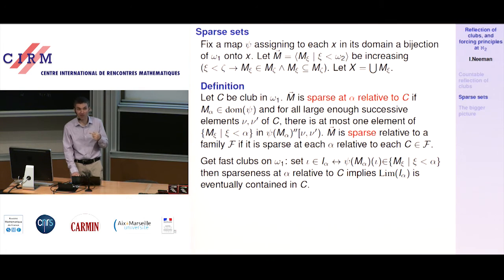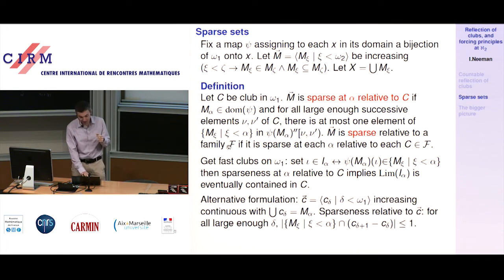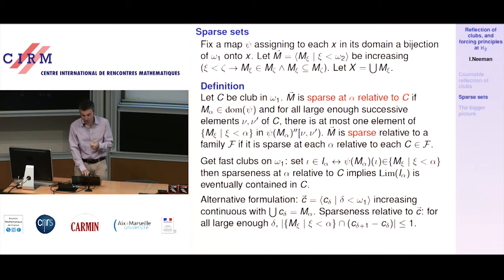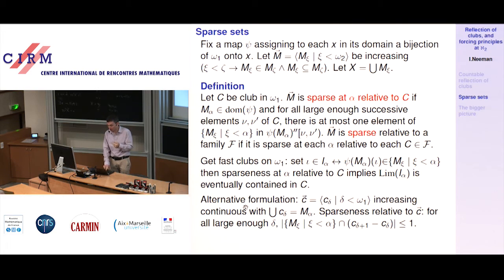Between any two points of i_alpha there will be at least one element of C, so the limit points of i_alpha are eventually contained in C — i_alpha's limit points form a fast club relative to C. If your family has plenty of clubs C, then i_alpha's limit points are fast relative to every club in F, giving you a fast club. This could also be phrased directly using clubs on m_alpha — increasing continuous sequences of countable subsets of m_alpha. Sparseness says that eventually in every new step c_{delta+1} minus c_delta, you get at most one new element of the m sequence.